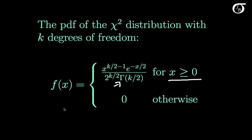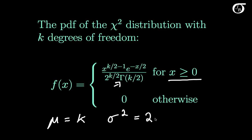Note a couple of other things. The mean of a chi-square distribution is equal to the degrees of freedom, which we're calling k here. And the variance of a chi-square distribution is equal to twice the degrees of freedom, or 2k.